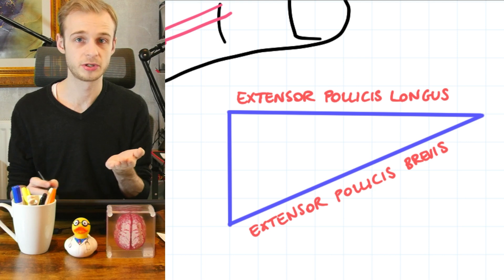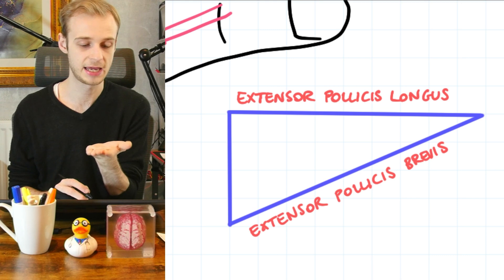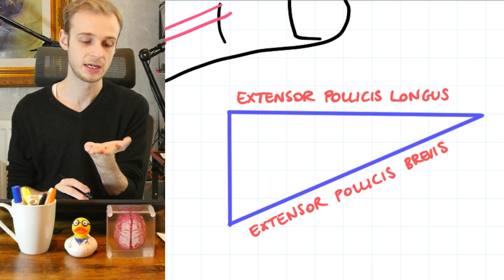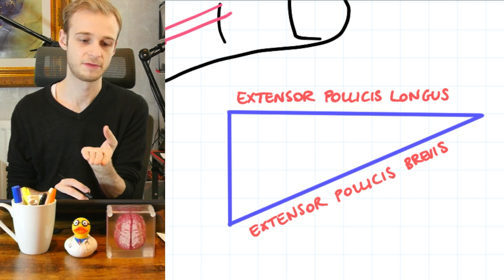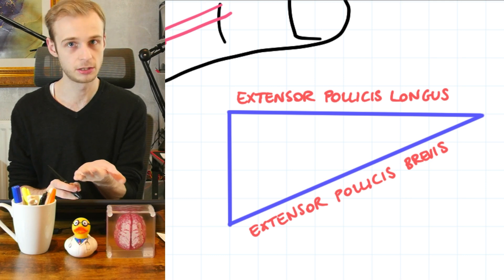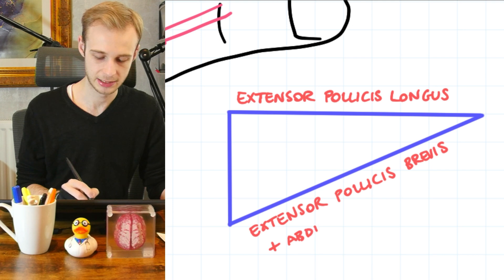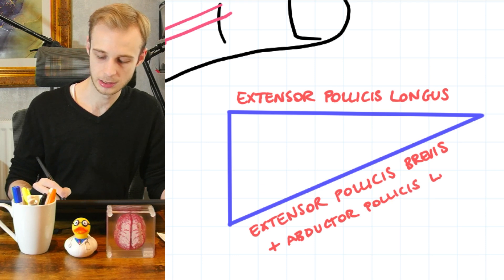Our second muscle that comes along the same path is abductor pollicis longus. And abduction, abduction of the thumb is bringing it up like this away from the surface of the hand up towards the ceiling when the hand is pronated. Again, the opposite would be adduction. So we have extensor pollicis brevis and abductor pollicis longus.